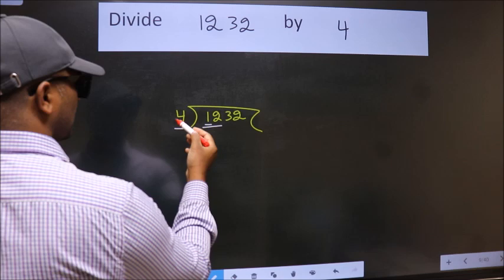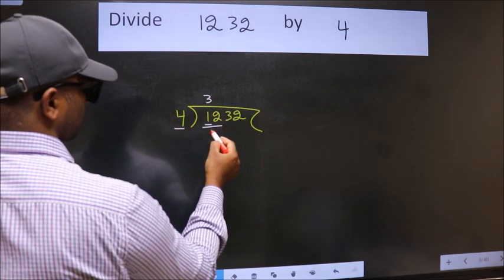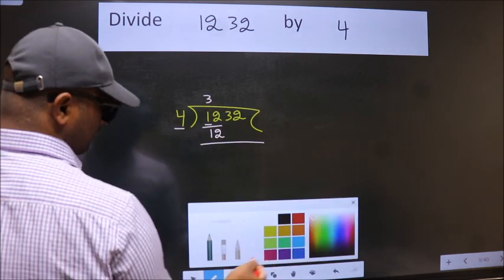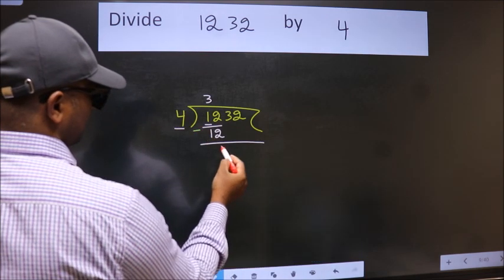When do we get 12 in the 4 table? 4 times 3 is 12. Now we should subtract. We get 0.